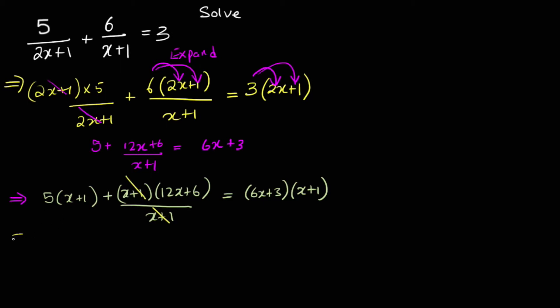Now what do we do? We expand. 5x plus 5 plus 12x plus 6 equals 6x squared. What's the method for us to do this? Grid method. Well done. Grid method. It might be long, but sometime people get it wrong, so I'm going to teach them grid method. Especially when you have negative terms. I've got 6x here, 3 here, multiplied with x and 1. So 6x squared, 3x, 6x, 3.